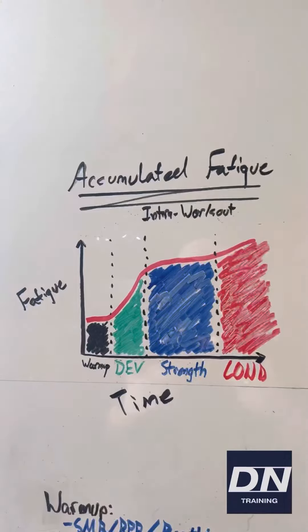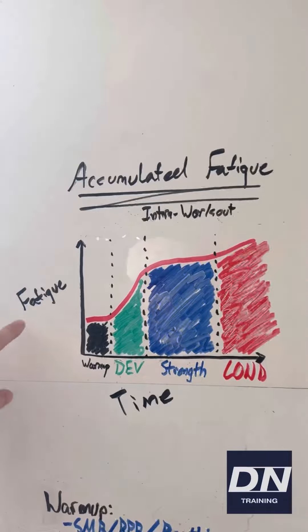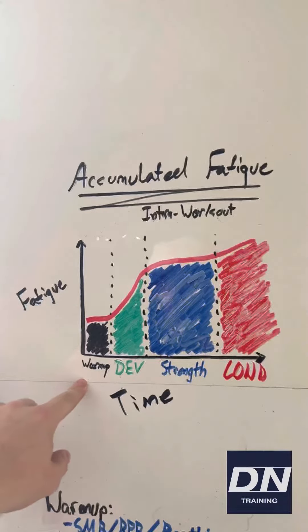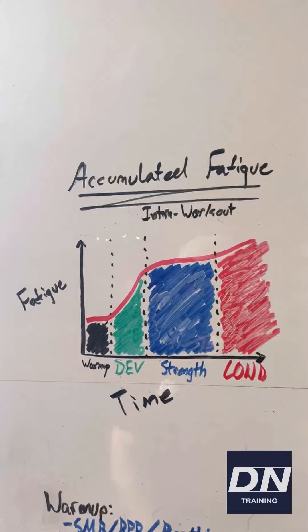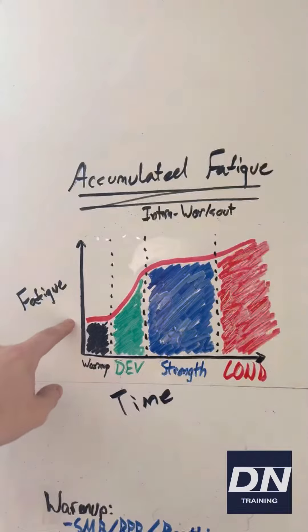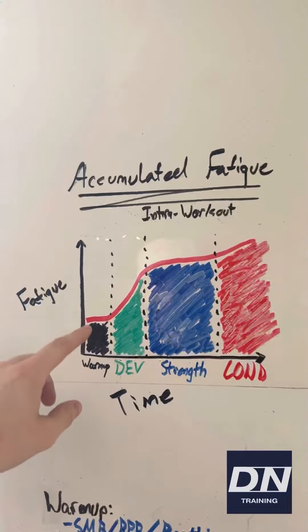The best way to account for it is just by graphing it out. Here we have a graph of fatigue over time during our workout. During our warm-up phase, this is where we do most of our mobility and most of our dynamic stretching, skips and hops, and low-level plyo work. It stays relatively steady — there's not much modulation.